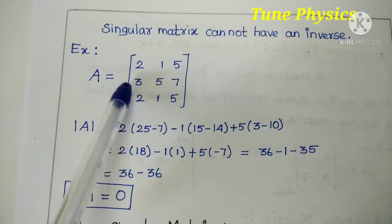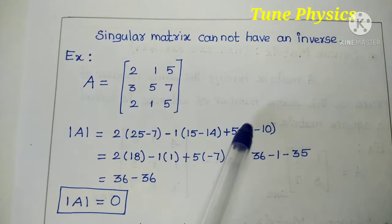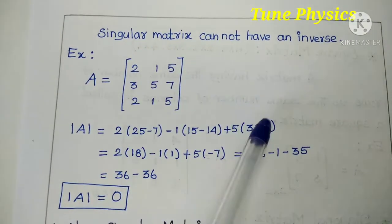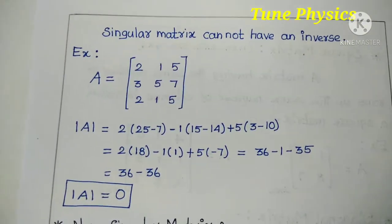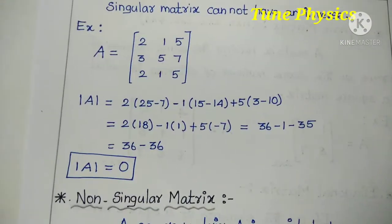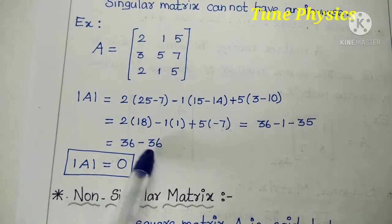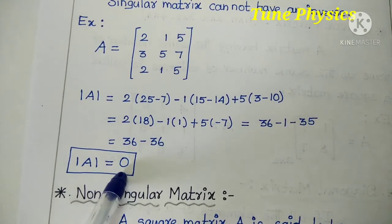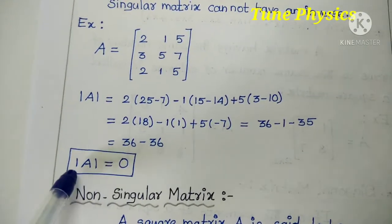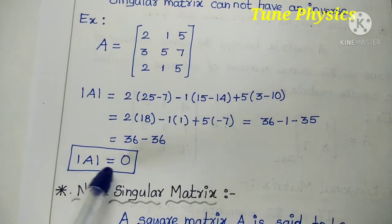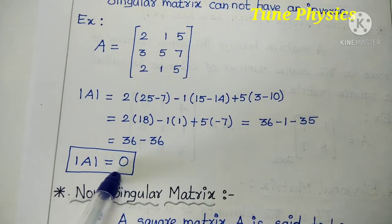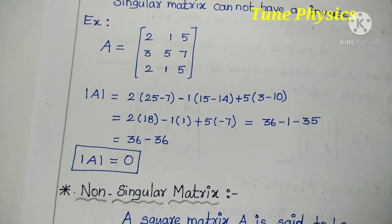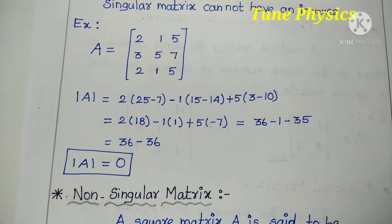The remaining value is 3 minus 2, which gives 5 is 10. Simplifying, the answer is 0. So the determinant is equal to 0, and this type of matrix is called a singular matrix.